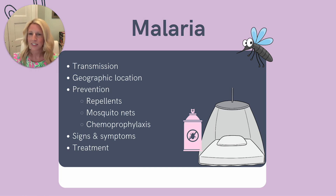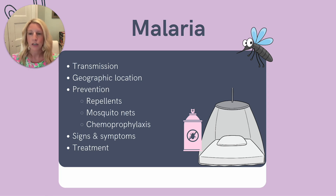How do we treat malaria? There are a number of different approaches and regimens based on local guidelines, drug sensitivity patterns, and drug availability. These generally consist of a combination of therapies such as artesunate, chloroquine, hydroxychloroquine (or Plaquenil), and doxycycline.